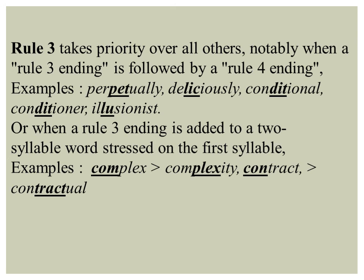Now let's revisit rule three, which takes priority over all other rules — notably when a rule three ending is followed by a rule four ending. Examples: 'per-PET-u-al-ly', 'de-LI-cious-ly', 'con-DI-tion-al', 'il-LU-sion-ist'. When the rule three ending is added to a two-syllable base word, the stress falls on the first syllable of that base. For example: 'COM-plex' becomes 'com-PLEX-i-ty'; 'CON-tract' becomes 'con-TRAC-tu-al'. So you see that the stress shifts when a different suffix is added — in 'complex' the stress is on 'com', but in 'complexity' the stress moves to 'plex'.